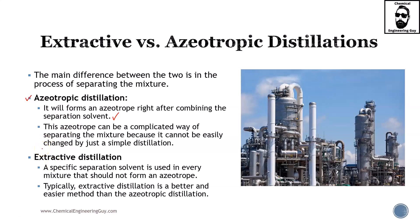The problem with extractive distillation is the solvent. A specific separation solvent is used for every mixture, and it should not form an azeotrope. You need to know your system and which solvents are convenient for it, and in many cases you may not know what the correct solvent to use is. Typically, extractive distillation is a better and easier method than azeotropic distillation, so in general you will try to use extractive distillation when possible, and then try azeotropic distillation.